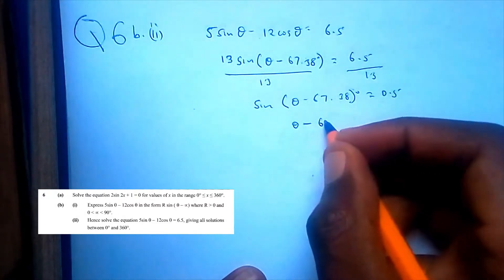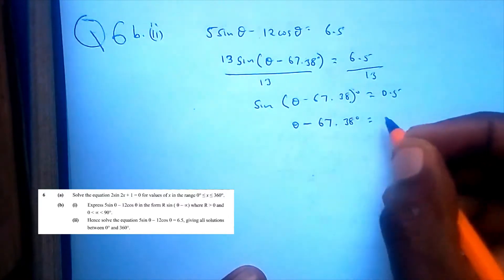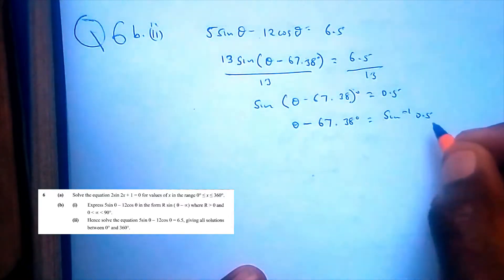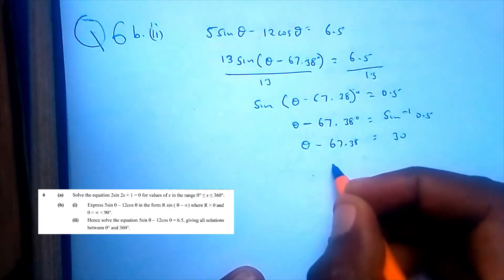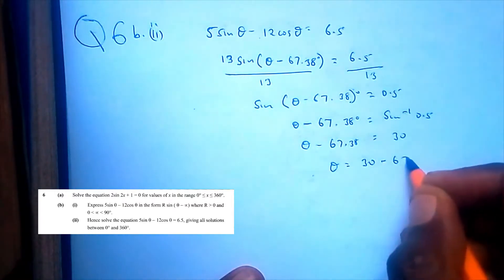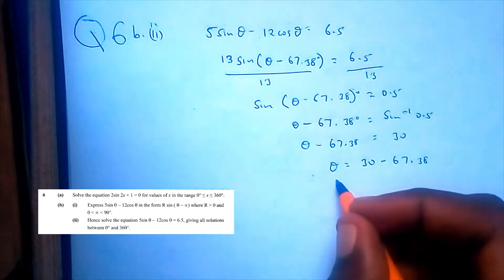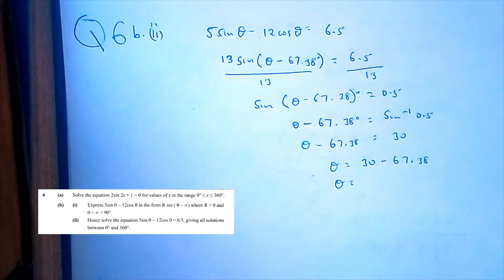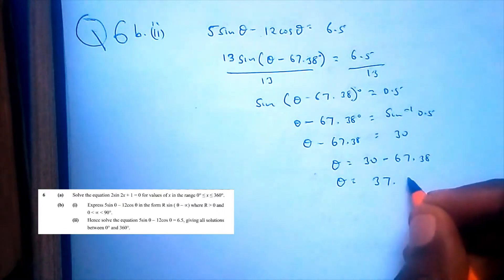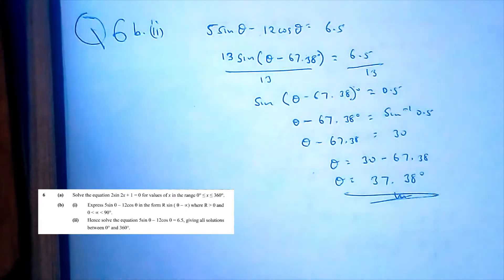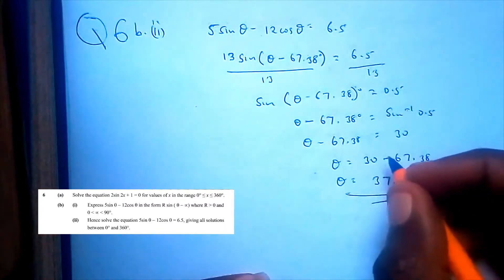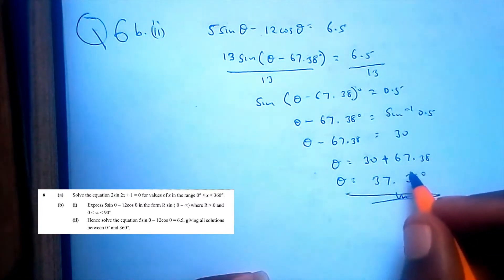So θ - 67.38° = sin⁻¹(0.5) = 30°. Therefore θ = 30° + 67.38°. Note: it should be plus, not minus. So θ = 97.38°.